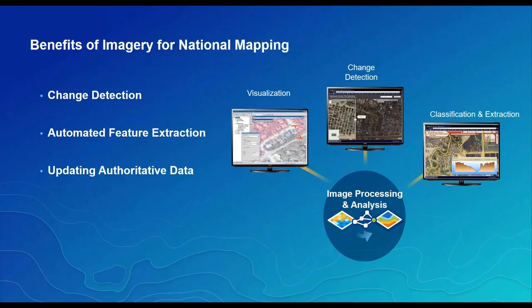Key benefits that leverage imagery for national mapping are change detection, automated feature extraction, and updating national authoritative data. With change detection, the national landscape is continually being changed by human and natural forces which impact the nation's population, natural resources, and economy. Examples of national change detection include changes in buildings, transportation networks, land use, watershed analysis, land cover, and deforestation.